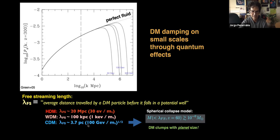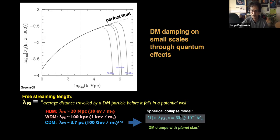For cold dark matter particles with masses of the order of giga electron volts, we expect the truncation to happen on scales of parsecs, which are very small in astronomical terms. People go back to redshift 60, the coupling time, and calculate the dark matter mass enclosed within this scale. What they find is that mass is of the order of 10^-6 solar masses, which is of the order of the planet Earth. Below 10^-6 solar masses, we should not expect any subhalo in these models.